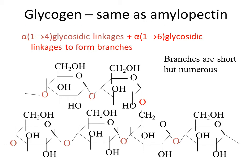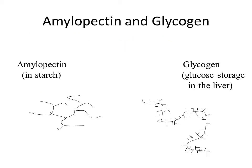Glycogen has the exact same linkages as amylopectin, but amylopectin has few branches and the branches are really long, whereas glycogen has many many branches but the branches are really short. So the difference is that amylopectin in starch has long branches, but glycogen has lots of little short branches.